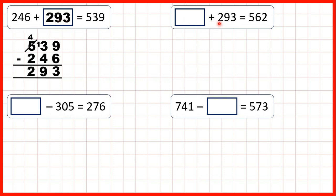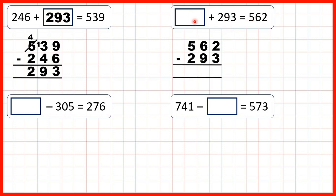Something plus 293 equals 562. Again, we've got a missing number addition, and it doesn't matter whether it's the first or the second number that's missing — we always use subtraction to find our missing number. 3 is larger than 2, so go to the left, one less, one in front. 12 minus 3 is 9. But now 9 is larger than 5, so again we go to the left, one less, one in front. 15 minus 9 is 6. 4 minus 2 is 2. So that gives us 269.